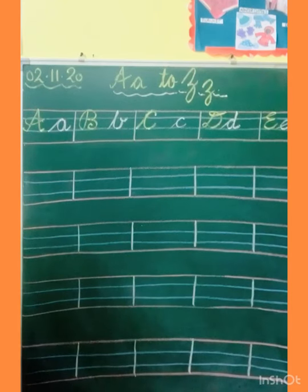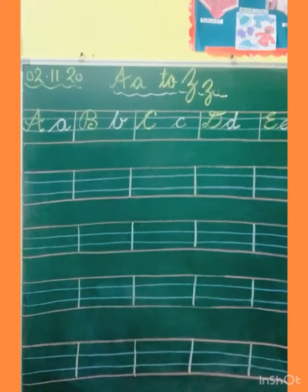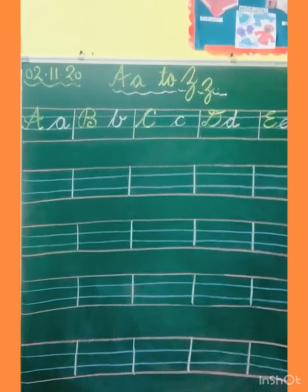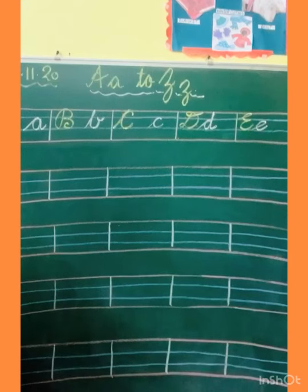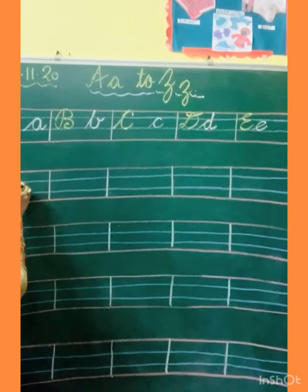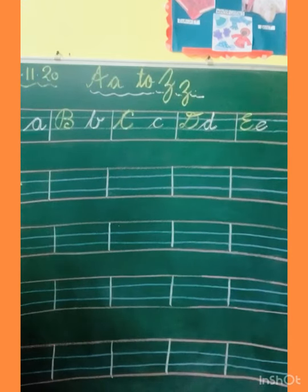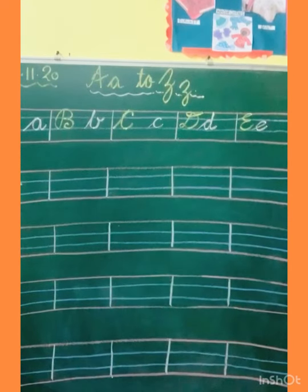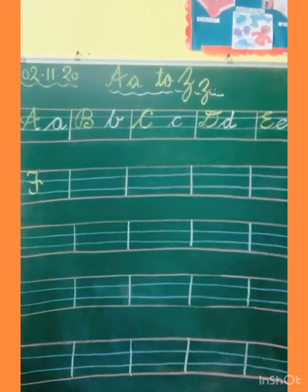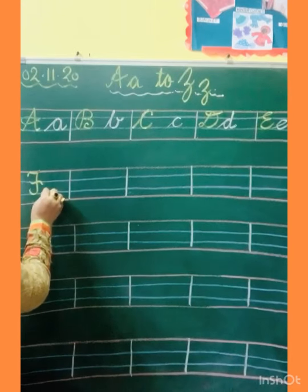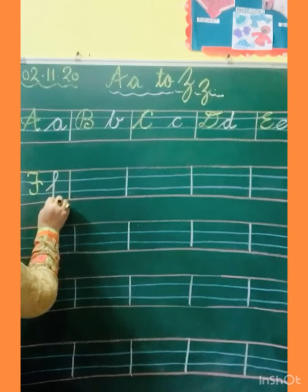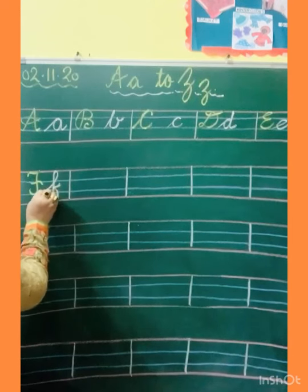After E, which letter do we make? F. How to make capital F? Small standing, make curve, come down, touch the third line, go up, make curve, and curve. This is F. And small F: go up, slanting line, come down, turn, and kick. This is small F.